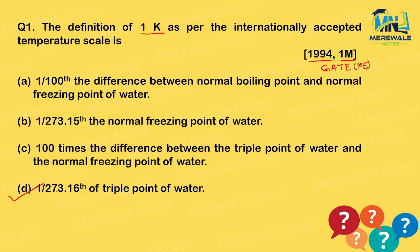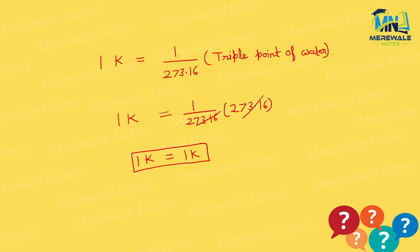D option is correct. The definition is: 1 Kelvin = 1/273.16 × triple point of water. Left-hand side equals right-hand side because the values cancel out.